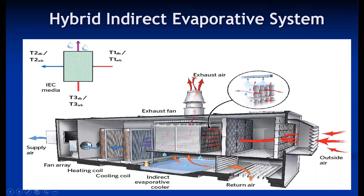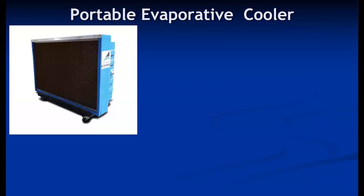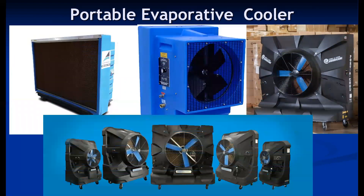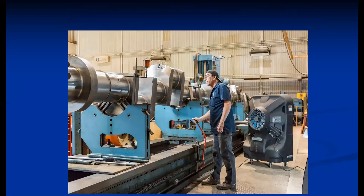In the hybrid indirect evaporative cooling system, return air is mixed with outside air and passed through the AHU. These are some models of direct evaporative coolers — table models generally used for spot cooling or local cooling. An application example shows their use in a factory for providing local cooling, giving comfort conditions for workers or operators.